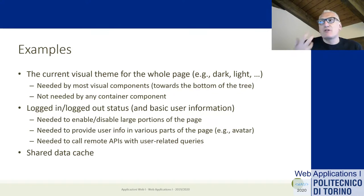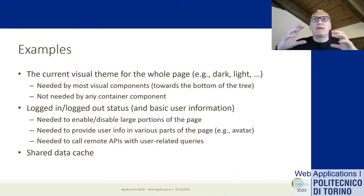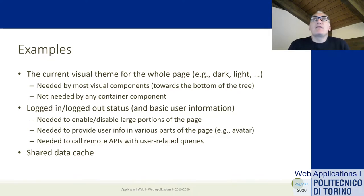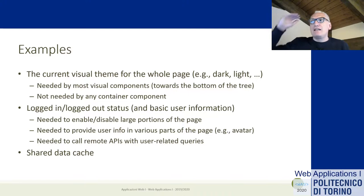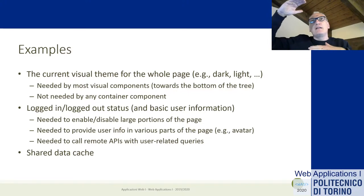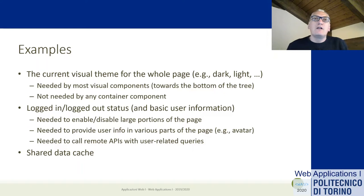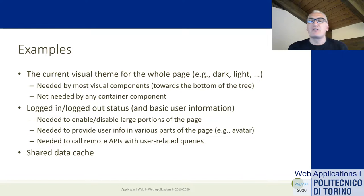Many intermediate components don't care about the theme because they only manage the logic or layout of the page. They would be forced to receive and propagate the theme down to each child just because some component at the bottom of the tree needs it. This information originates at the top, is needed at the bottom, and is not used in the middle — making it a good candidate for a global context.